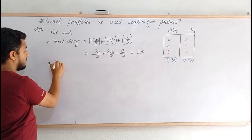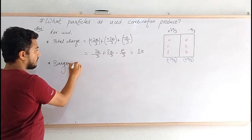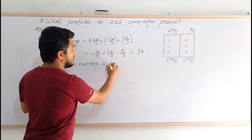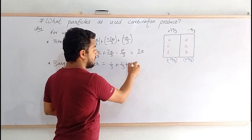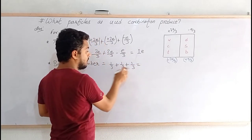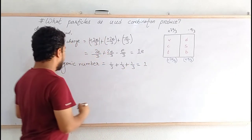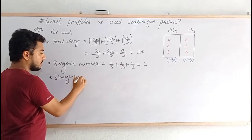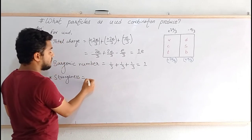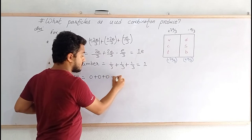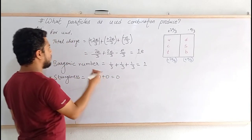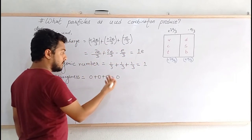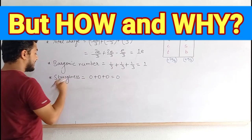Now let's talk about baryonic number. Baryonic number of all the quarks is 1/3. So we will add 1/3 + 1/3 + 1/3, and this will give us value 1. And strangeness: the UUD combination does not have any strangeness properties, so 0 + 0 + 0 = 0. The particle which has total charge 1e, baryonic number 1, strangeness 0 — the particle is called proton. Yes, the particle is proton.